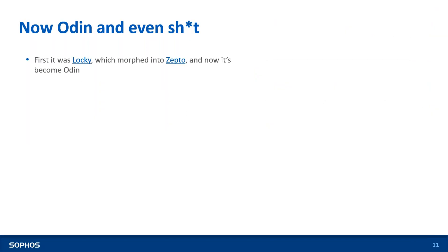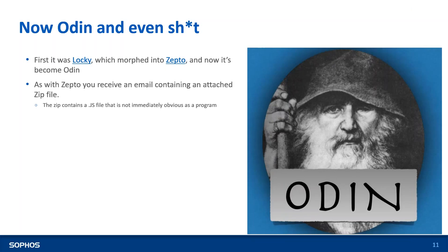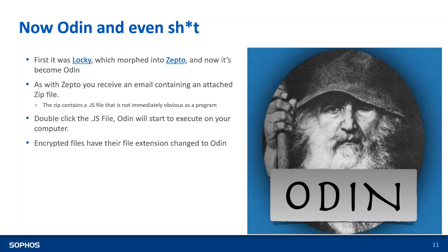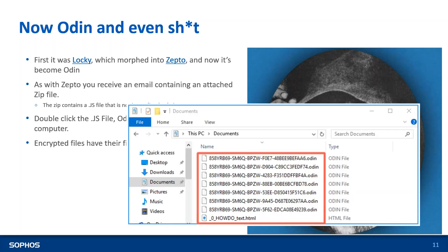The new kid on the block is Odin. Initially it was Locky, then Zepto, and now it is Odin. Odin is pushed out through an email with vaguely grammatical English — something like 'your order has been processed' — with a document file you are forced to click. The moment you click, Odin starts executing. The extension of encrypted files changes to '.odin'. Files in the document folder are all encrypted with the '.odin' extension.